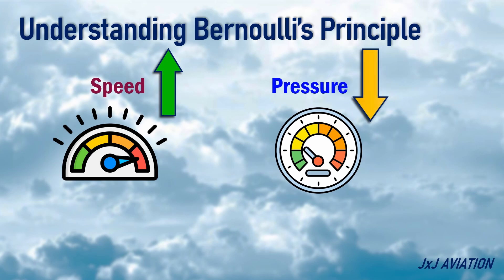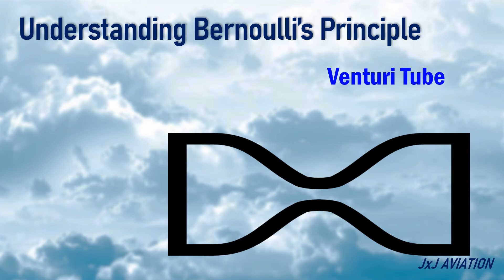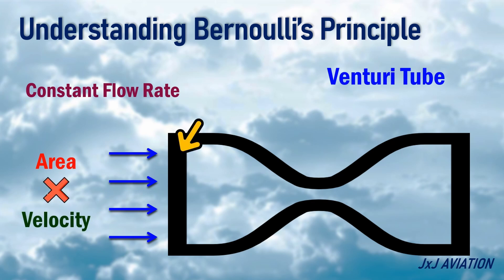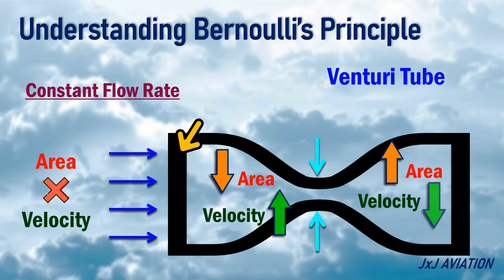A simple example for this is the venturi tube. The fluid is moving through the venturi at a constant flow rate. The flow rate is expressed as cross-sectional area times the velocity. At the inlet, there is a specific fluid flow rate. As the area decreases, the fluid will try to maintain a constant flow rate by increasing the velocity. When the area increases again, the velocity decreases for maintaining a constant flow rate.